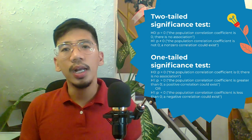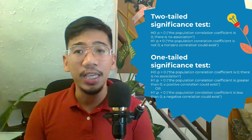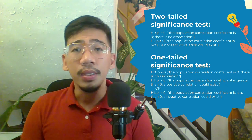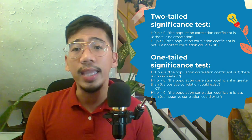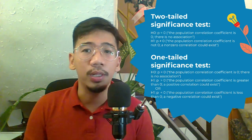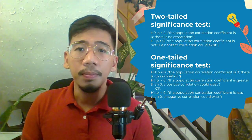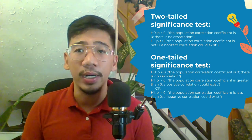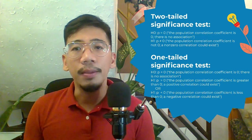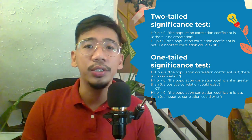The null hypothesis (H0) and alternative hypothesis (H1) of the significance test for correlation can be expressed in the following ways, depending on whether a one-tailed or two-tailed test is requested. For a two-tailed test, the null hypothesis is that rho equals 0, meaning the population correlation coefficient is 0 and there is no association between your variables. The alternative hypothesis is that rho is not equal to 0, meaning a non-zero correlation could exist.